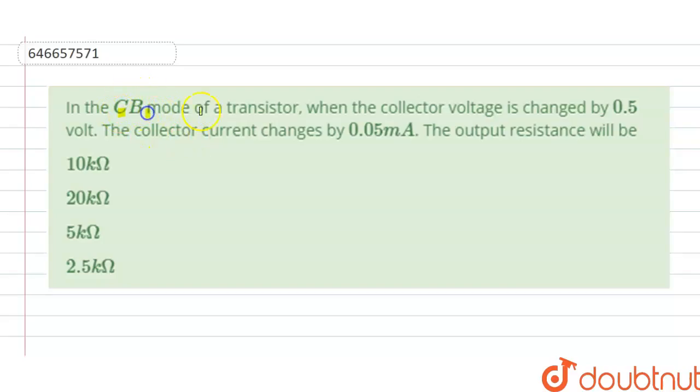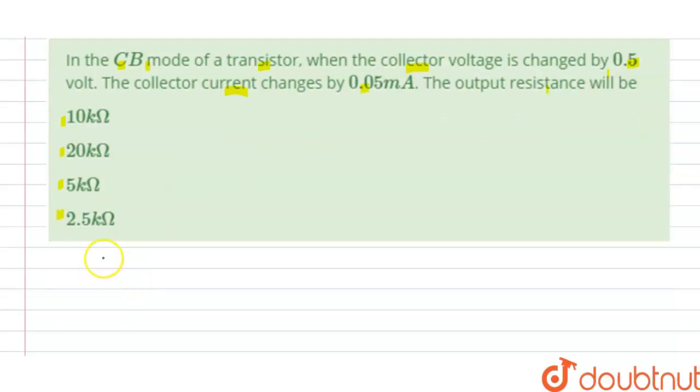Hello students, today our question is: In the collector-base mode of a transistor, when the collector voltage is changed by 0.5 volt, the collector current changes by 0.05 milliampere. The output resistance will be?